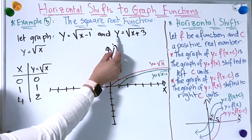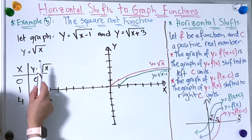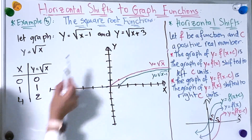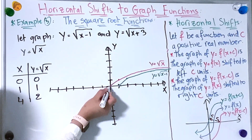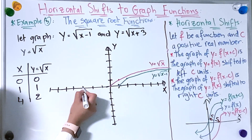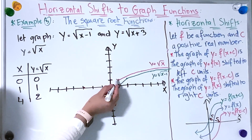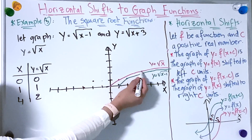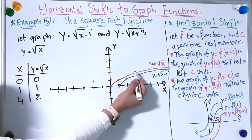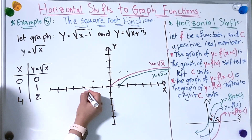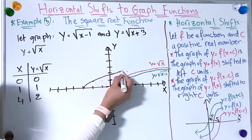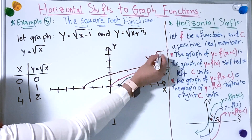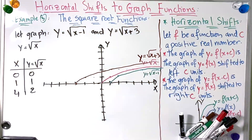Now let's move to the last graph: y = √(x + 3). We're going to use the graph of y = √x and shift it to the left 3 units using the same points. I take 0 and shift it 3 units: 1, 2, 3. Then the next point and shift 1, 2, 3. Then x = 4 and shift 1, 2, 3. Now I'm going to connect the points. And now I have found y = √(x + 3).